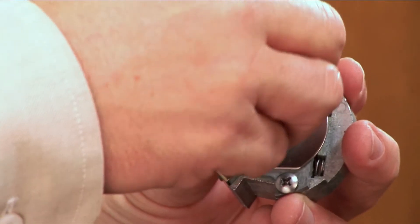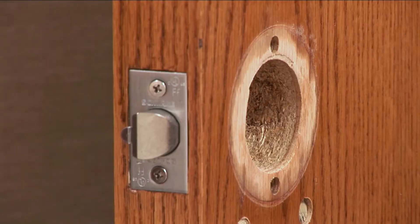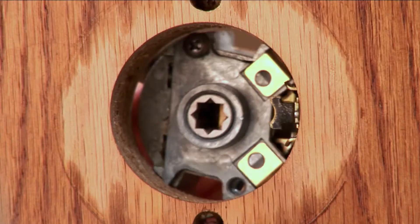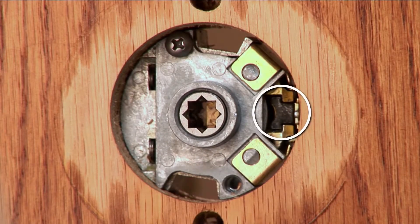Separate the latch guard from the retractor. Install the retractor assembly from the outside of the door. Be sure that the tabs on the latch are correctly inserted into the retractor assembly.